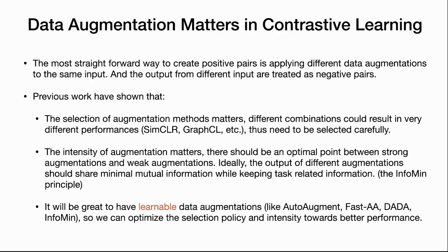There should be an optimal point between strong and weak augmentation. Ideally, the outputs of different augmentations should share minimal mutual information while keeping task-related information intact. This is also known as the info-min principle, proposed recently. To satisfy this, it would be great to have learnable data augmentations — like auto-augmentation, fast augmentation, and data info-min — so we can optimize the selection policy and intensity towards better performance, especially in semi-supervised learning.